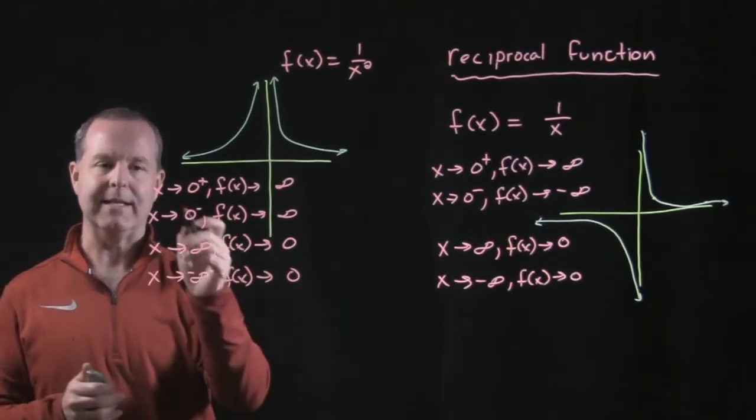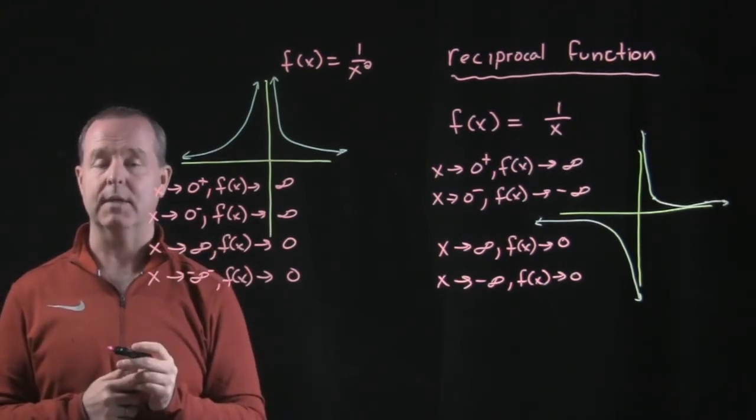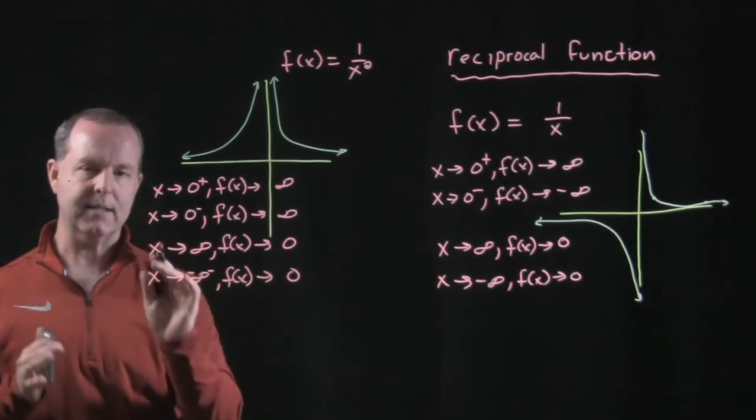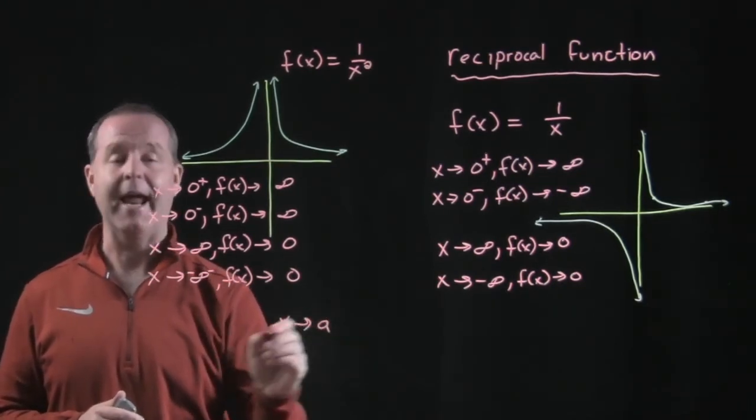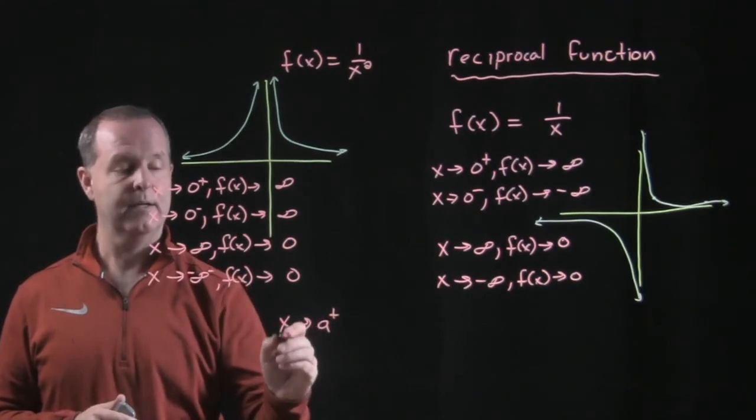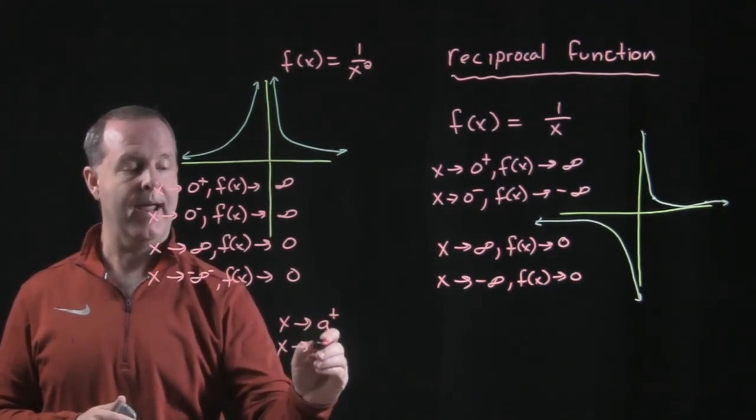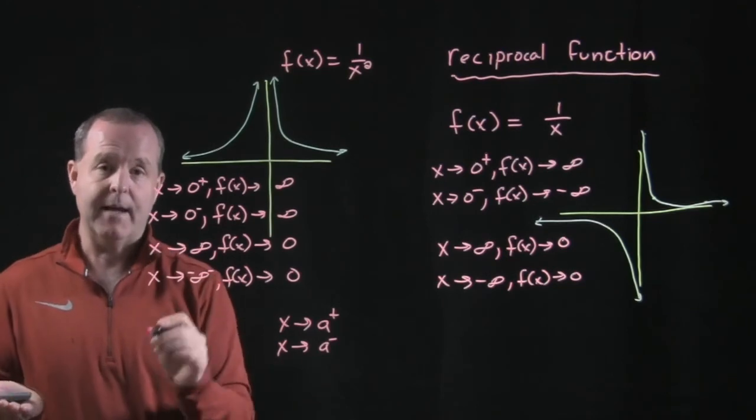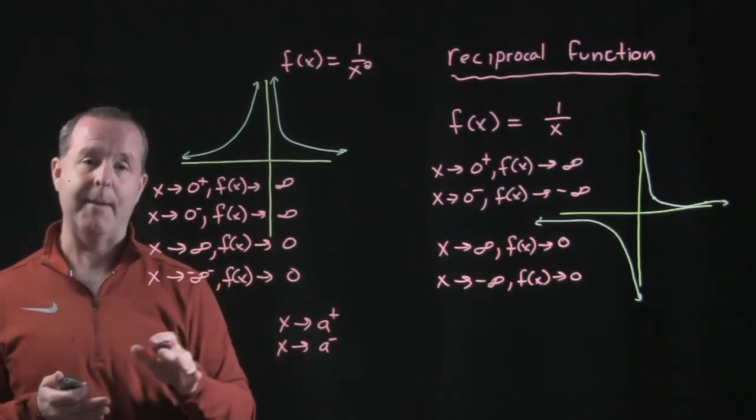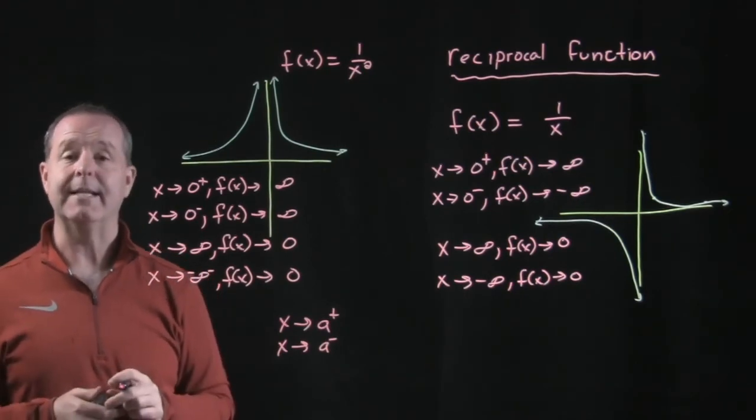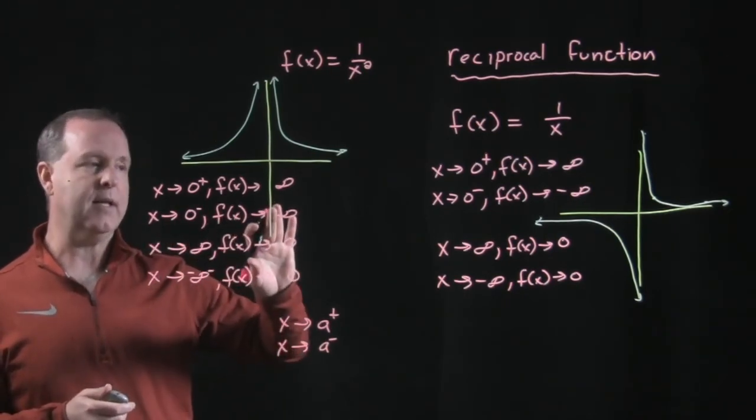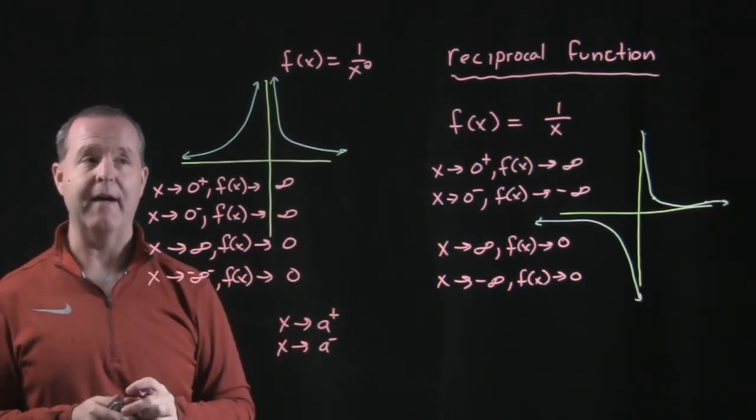But that's not always going to be the case. So x isn't always going to approach 0. So when that's the case, we start to use the terminology that x is approaching some point a from the right side or x is approaching some a from the left side. And from that, we want to determine what's going to happen to the value. Is it going up? Is it going down? Where is it going to tend to go as we look at farther and farther and farther out values?